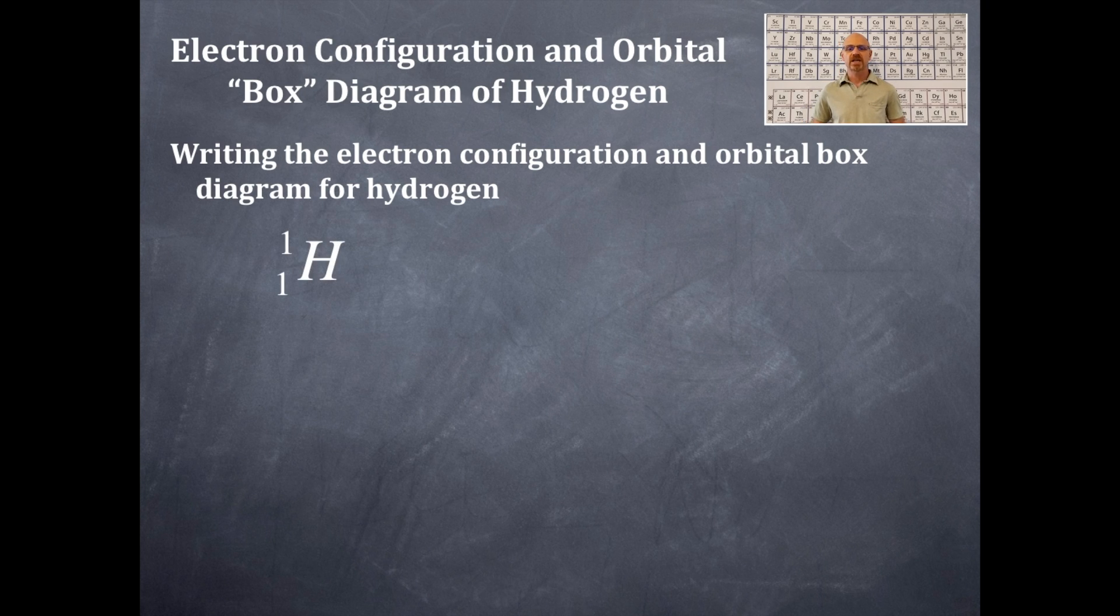So this is the standard notation again. The electron configuration is 1s1, just like what we had before. So what I like to do is I like to tell my students, write out the electron configuration first, then after writing the electron configuration, then you're going to work yourself into the orbital box diagram until you feel comfortable doing the orbital box diagrams directly from the periodic table.